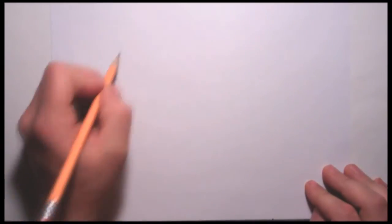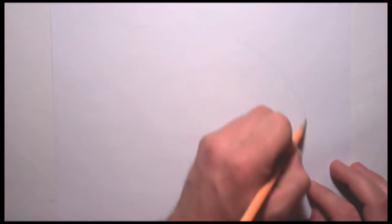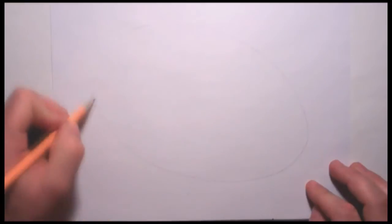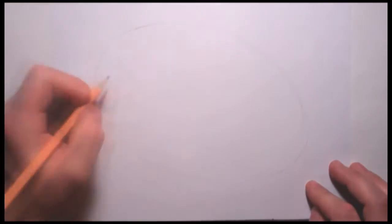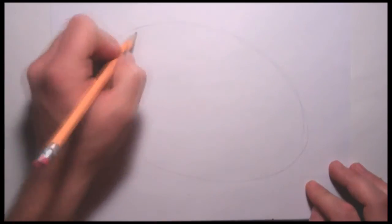Hello, today I want to show you how to draw a football. First we're going to start with an oval. Come through here and just draw a very large oval. This will be the start of our football.